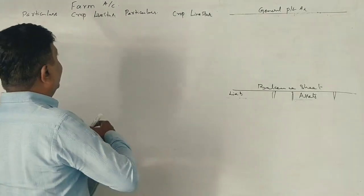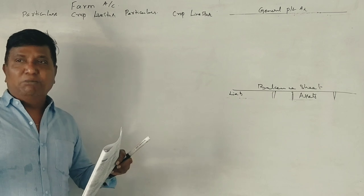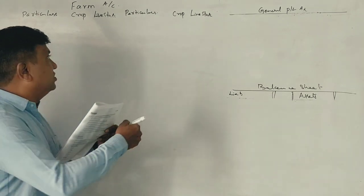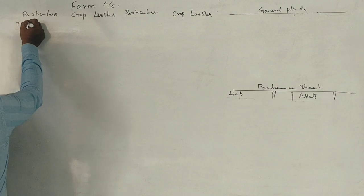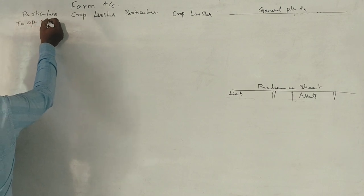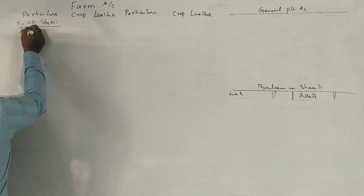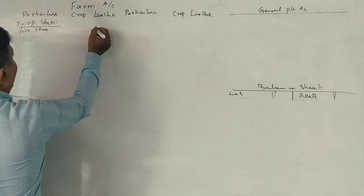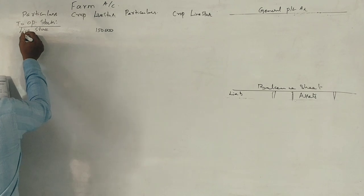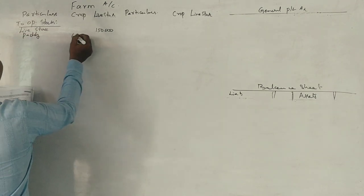Let's start the solution. Opening stock — livestock: 1,150. Paddy: 60,000.